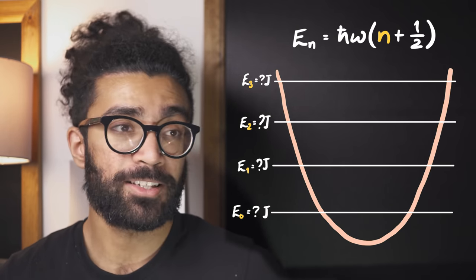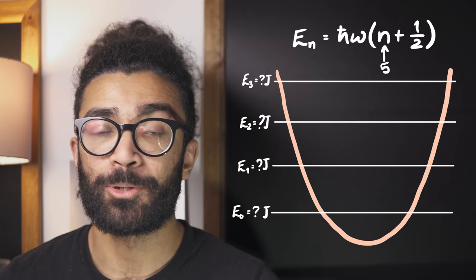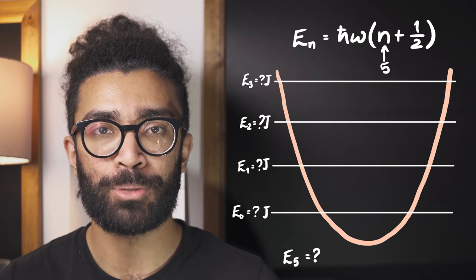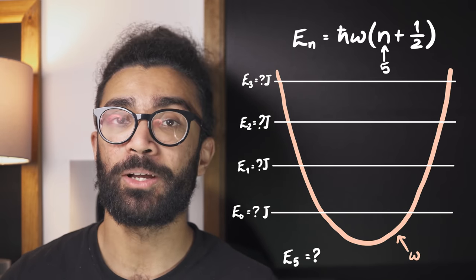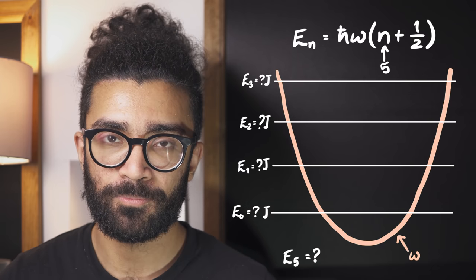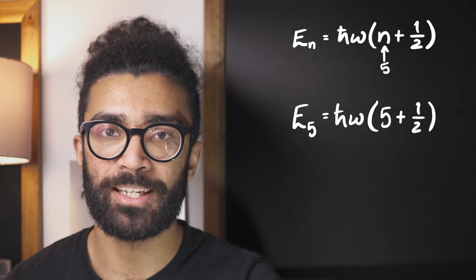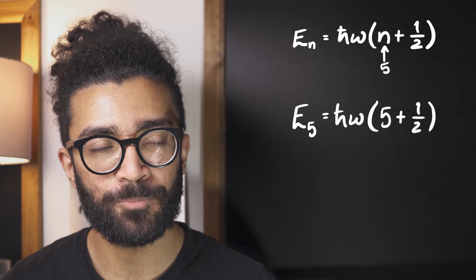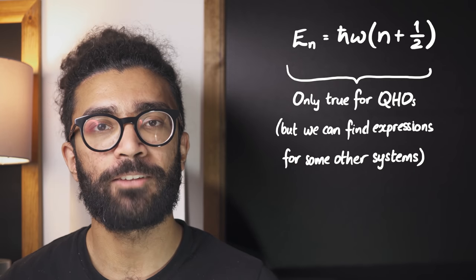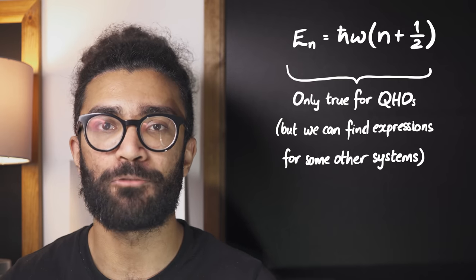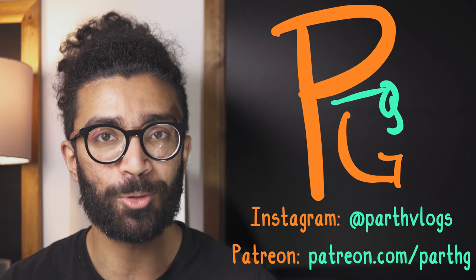And of course we've got the number of quanta in any given energy level, plus one half. So here's why this is so powerful. Let's say we just want to find out the energy value for energy level number five — n equals five — in a given potential well. If we know the shape of the potential well, we can easily find out the value of omega. H-bar is just a constant, and we know n equals five, so we just plug these numbers in and immediately know what the energy value is for the n equals five level in this exact potential well. Now this expression only applies to quantum harmonic oscillators, but we can find similar expressions for other systems that behave in roughly similar ways.